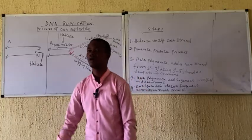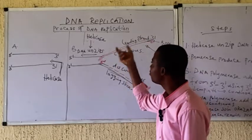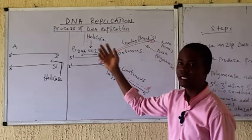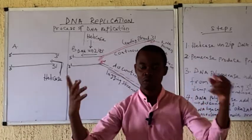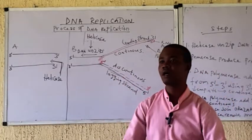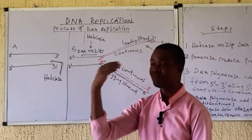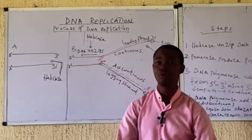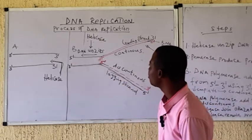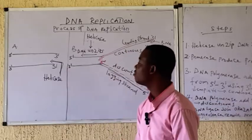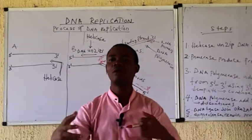Now let's take a look at the process of DNA replication — the mechanism involved when DNA wants to produce an identical copy of itself. What are the steps? What are the processes and mechanisms involved? The first step in the process of DNA replication is the unzipping of DNA.